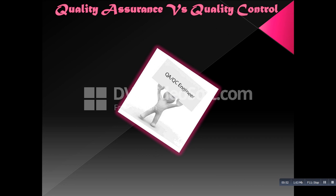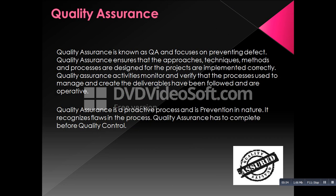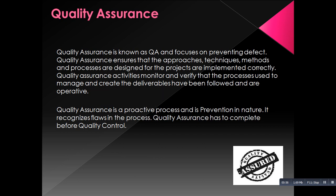Quality assurance is known as QA and it is said to be proactive, which means it focuses on preventing defects. Quality assurance is a process-oriented activity, which means it checks the step-by-step procedures.